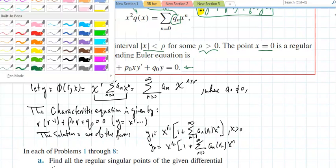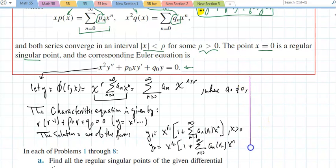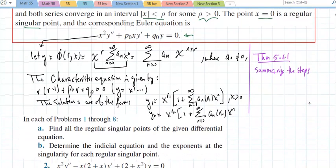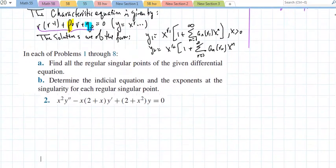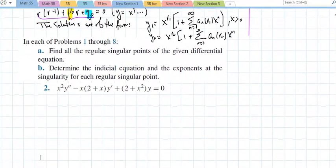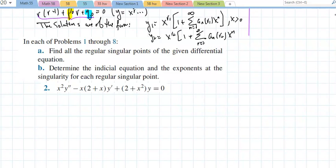Theorem 5.6.1 really summarizes the steps. So here we're no longer deriving. We just need to figure out this equation and solve it. To really figure out what p sub 0 is, you have to write the equation in that form. In 1 through 8, same deal. Find all the regular singular points of the given differential equation. We know how to do that. Determine the indicated equation and the exponents at the singularity for each singular point.